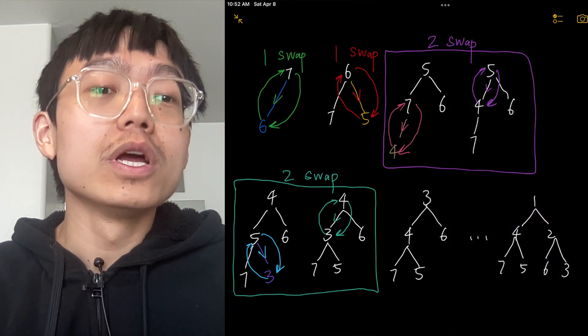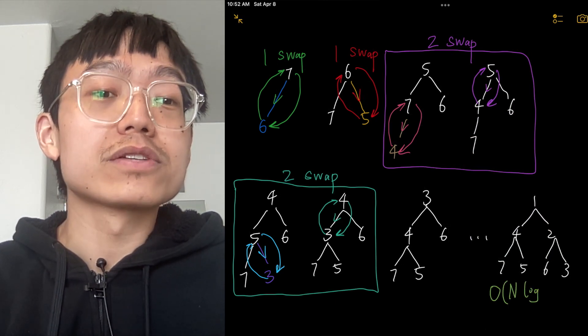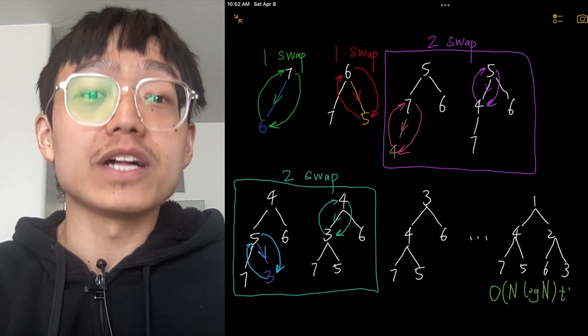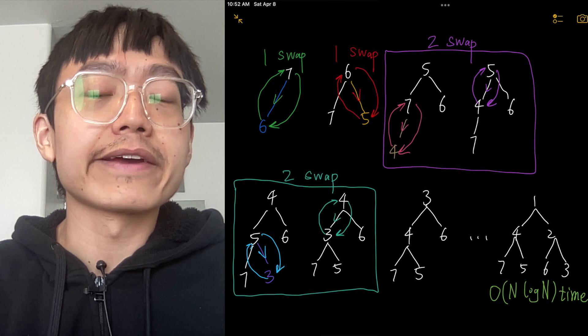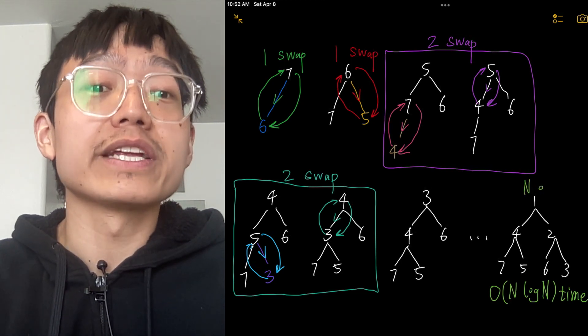So in this approach, we start with an empty heap and insert elements one at a time. In each iteration, we may need to perform a log n operation to maintain the heap property for our binary heap. Since we are inserting n elements, the total time complexity of this process is O(n log n).